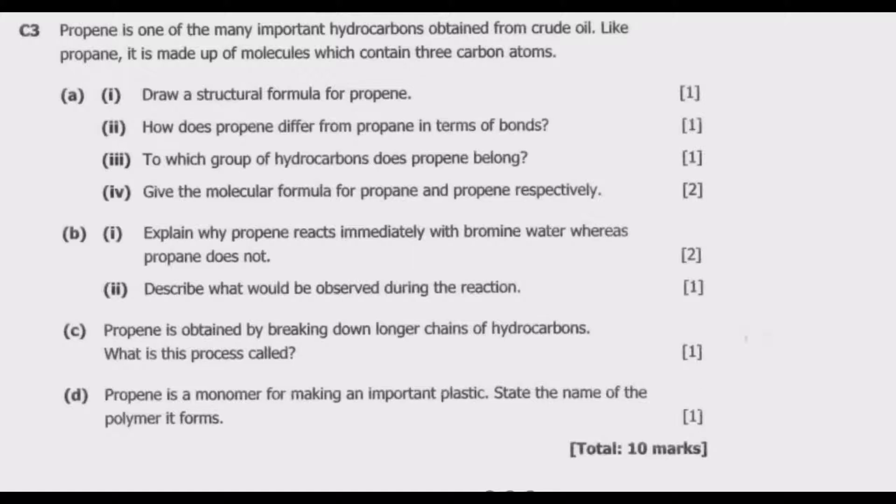Please if you haven't seen the previous episodes in which we've covered all the questions in this paper, go and check on our YouTube channel. We've covered all the questions extensively just to help you with your grade 12 exams. Question C3: propene is one of the main important hydrocarbons obtained from crude oil. Like propane, it is made up of molecules which contain three carbon atoms.